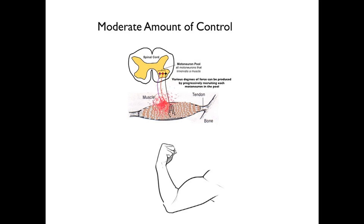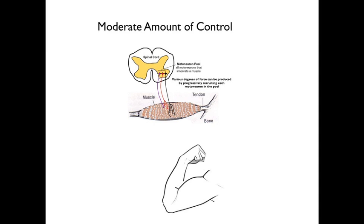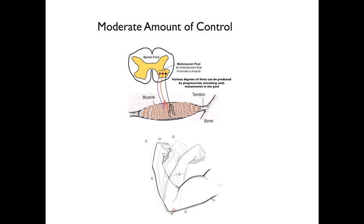Next, we recruit the red fiber, which innervates three muscle fibers and thus generates a somewhat larger contraction increment. Finally, we recruit the black fiber, which innervates five muscle fibers and produces an even larger increment in contraction. You can see the increments in contraction produced by the recruitment of the three motor neurons in the pool, which are also indicated by the size of the arrows.